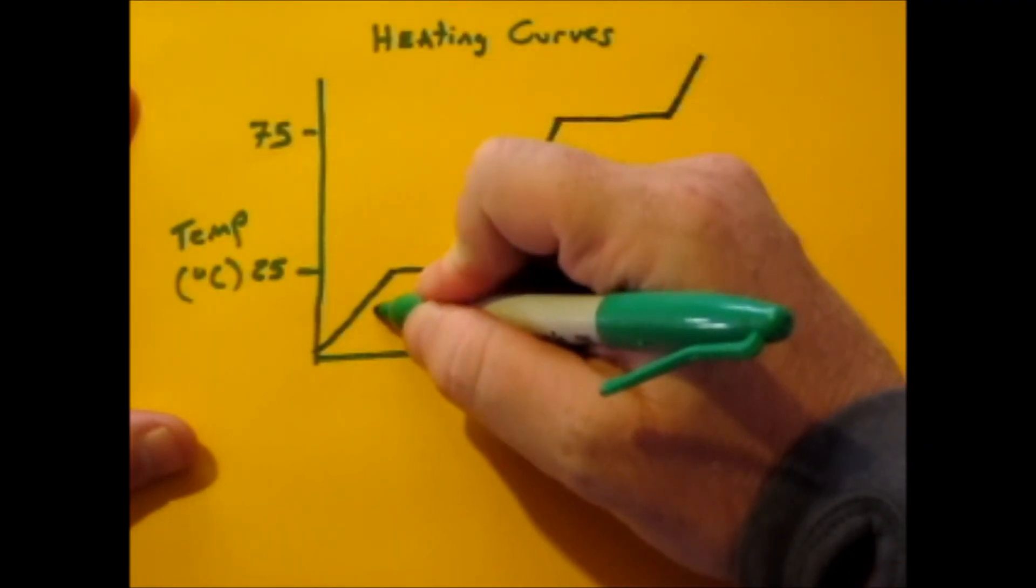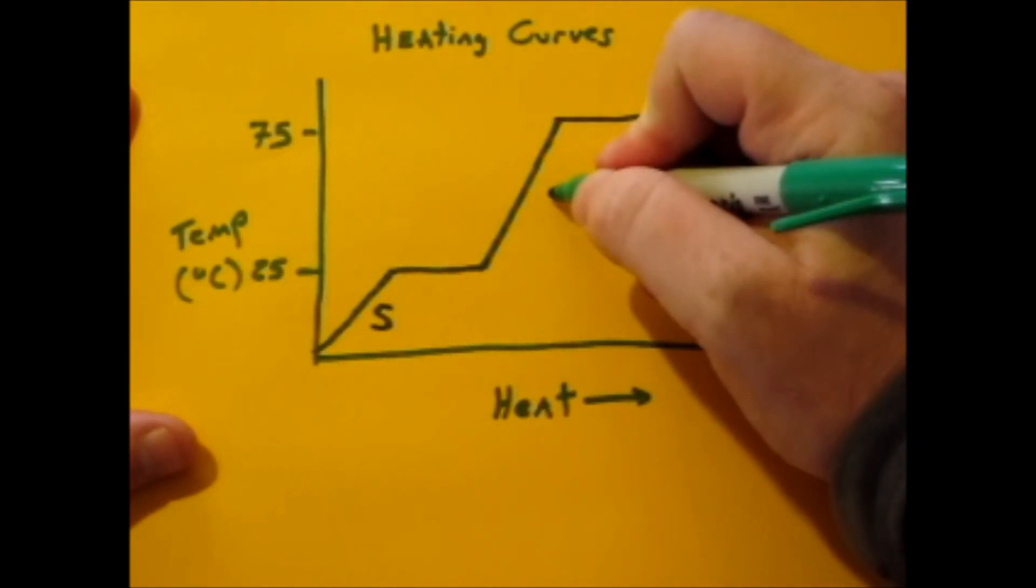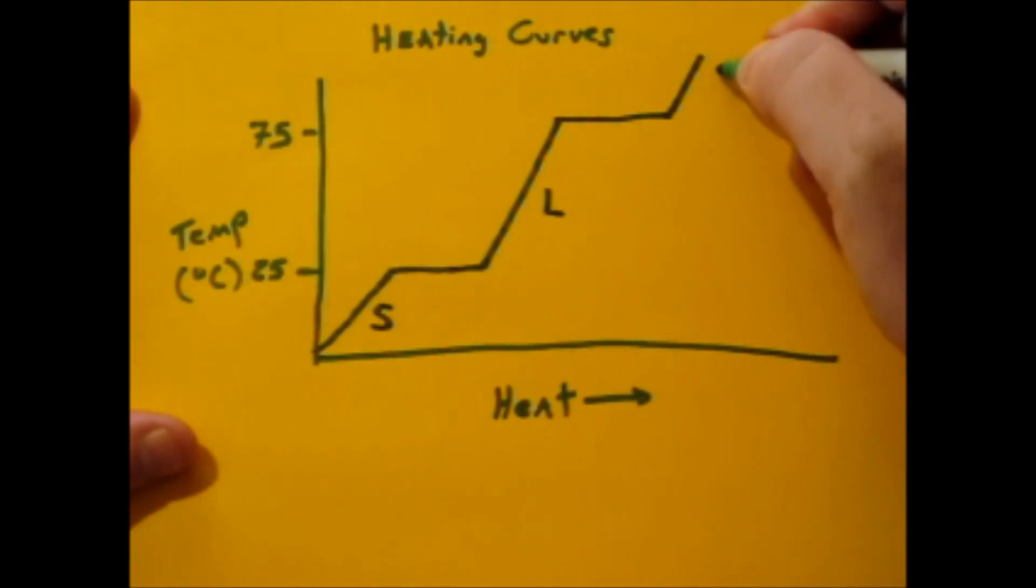The lowest temperature segment is going to be a solid, so you're going to want to label that. The middle segment is going to be a liquid, you're going to want to label that, and the gas is the highest energy state, which is all the way up top.